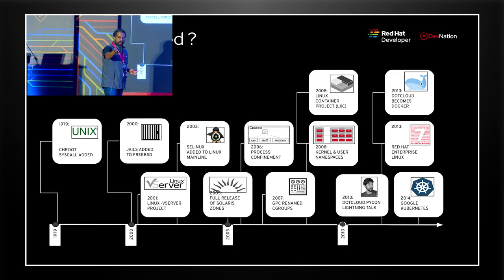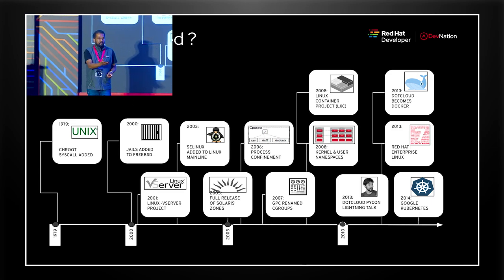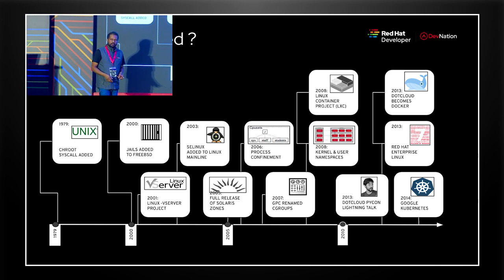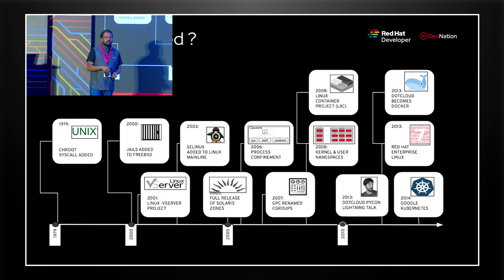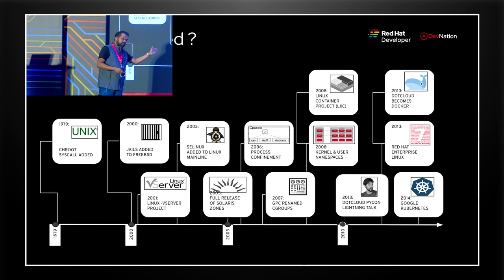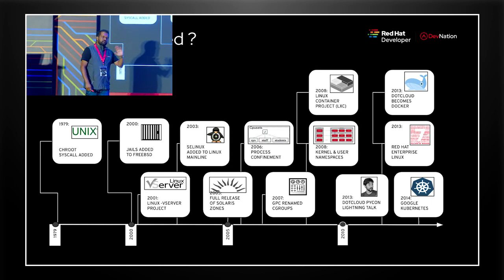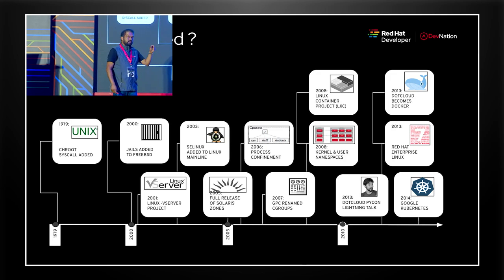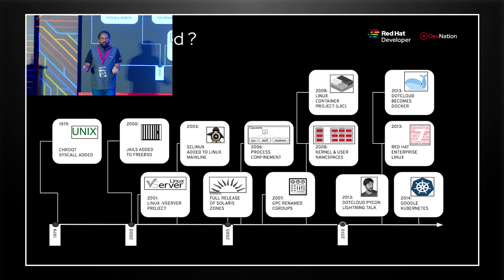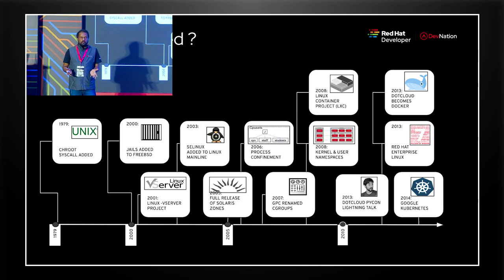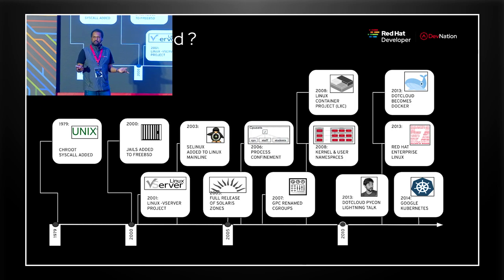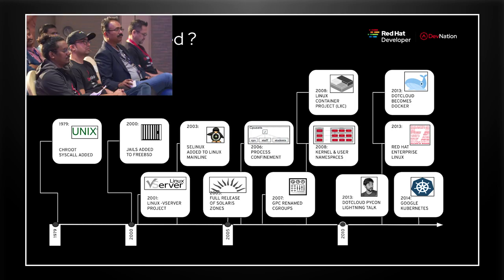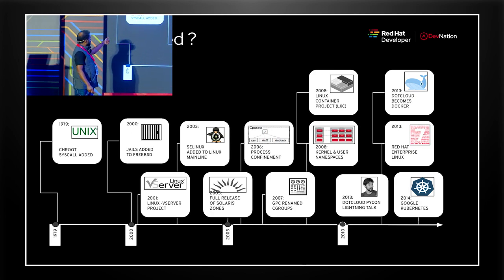Your Android phone - derivative of Unix. Your Mac, your Apple - all of them are derivatives of Unix. There's no technology right now which hasn't been thought of and envisioned back in the day by great engineers at AT&T, Bell Labs, Berkeley University, and MIT. How many of you are writing programs in a proprietary programming language now? None. Most open source programming languages are built on open standards. So it started in 1979.